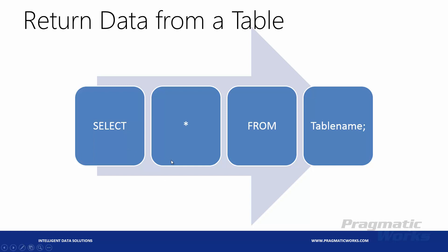Then we have a STAR, which is a wildcard character representing all the columns in a particular table. After the STAR, we have FROM, and after the FROM keyword we designate the tables we're going to return results from in our query. In the FROM, you'll enter your table name, and if you have a combination of table names, you will do the joining after the FROM statement. We'll get to joining a little bit later in our modules.